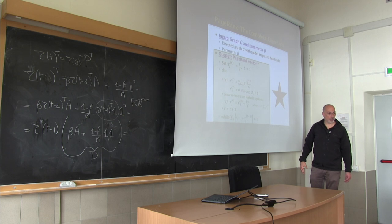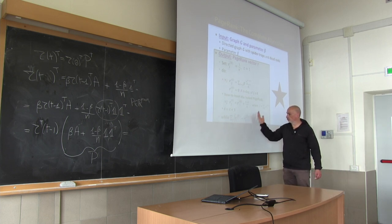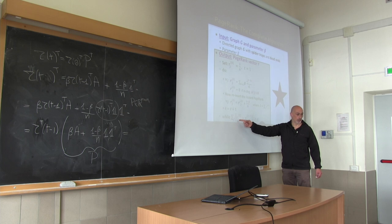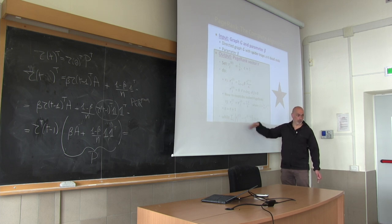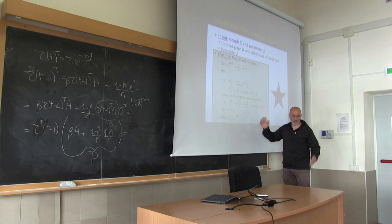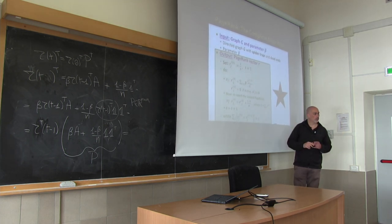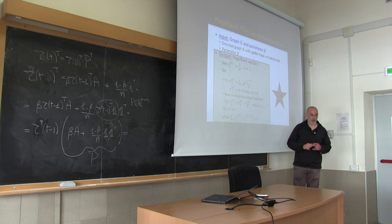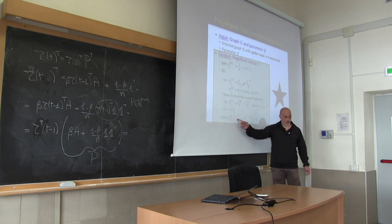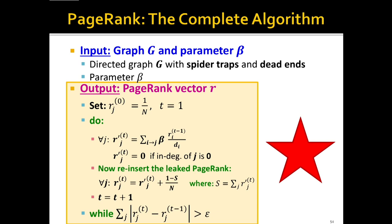What is the stopping criterion? For example, the 1-norm of the difference of the two vectors. As the vectors get closer and closer, this difference will tend to zero. You continue as long as this difference is greater than some epsilon that you decide. Is epsilon larger or smaller than 1? Since these vectors always sum to 1, epsilon can be something small — like 10 to the minus something. Once done, that is your PageRank.